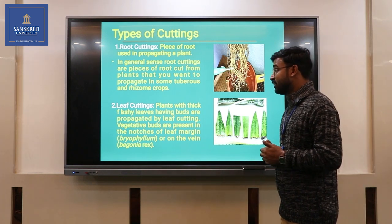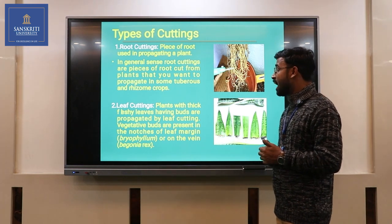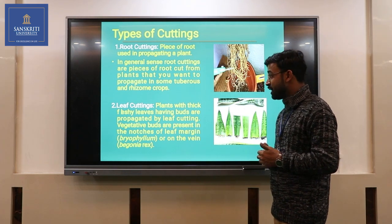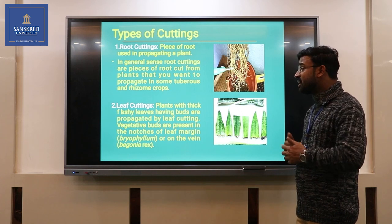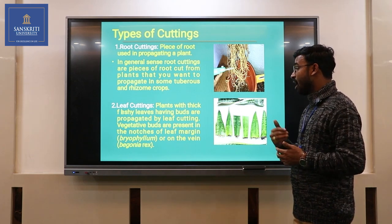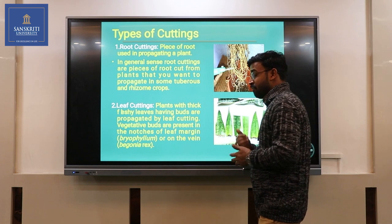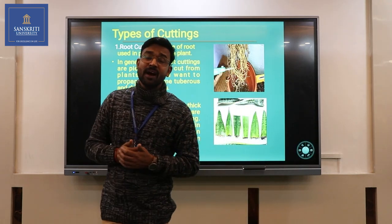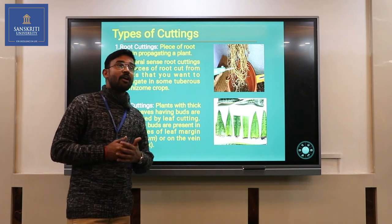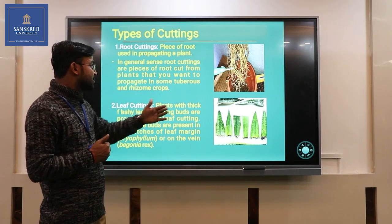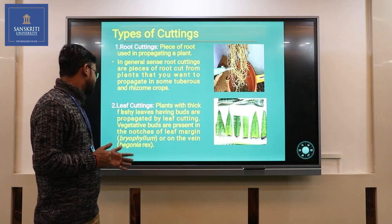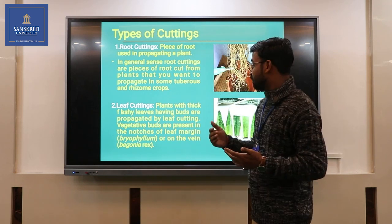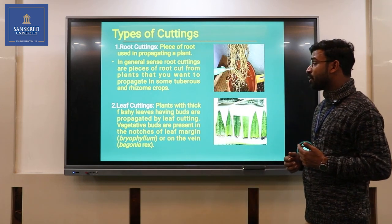Next is leaf cuttings. Plants with thick fleshy leaves having buds are propagated by leaf cutting. Vegetative buds are present in the notches of the leaf margin. Famous examples of leaf cutting are Bryophyllum, Sansevieria (snake plant), and Bignonia.